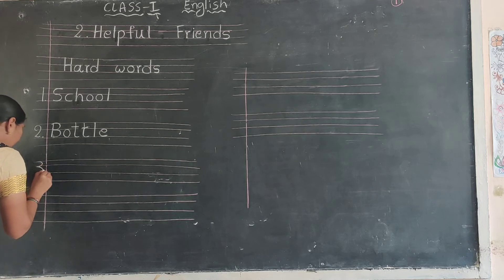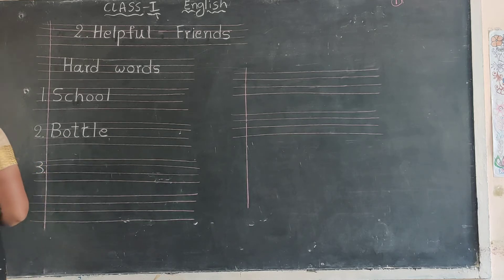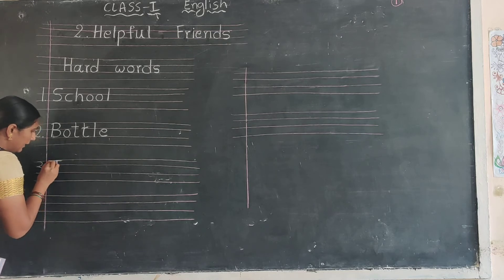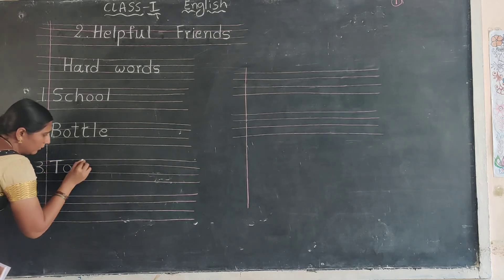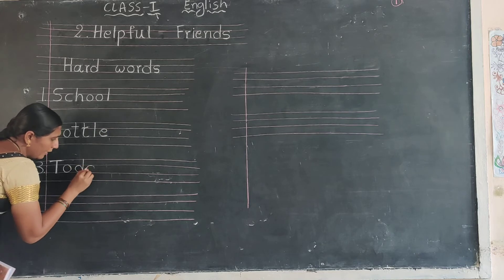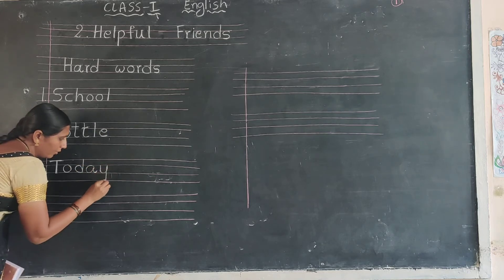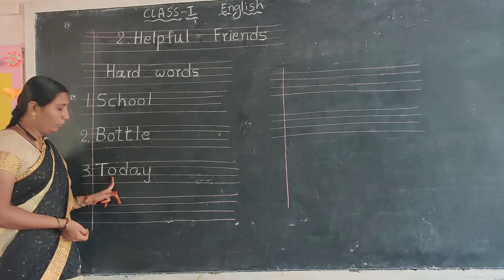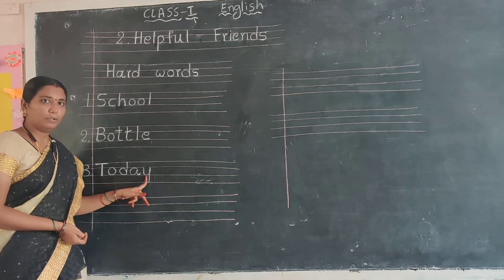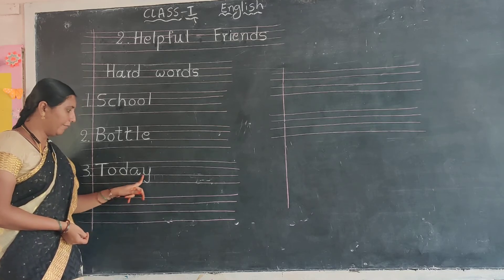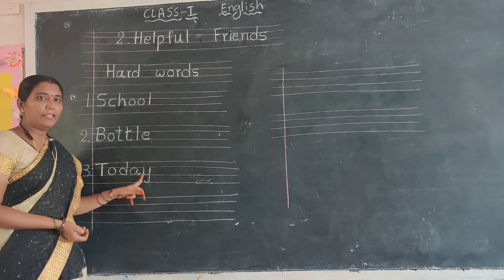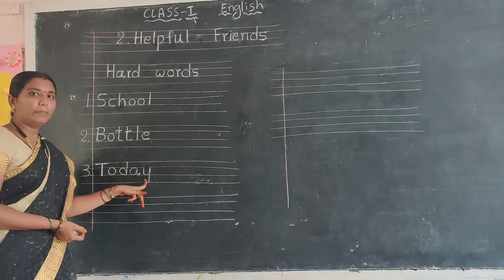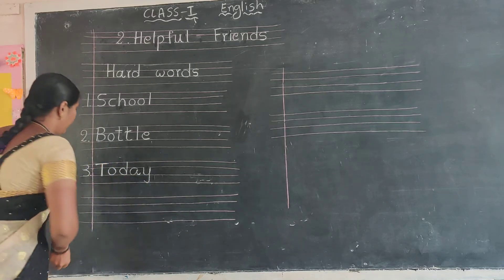Next. Come to next slide. Number three in the margin. Capital letter T. T-O-D-A-Y. Today. T-O-D-A-Y. Today. Today means tomorrow — the current day.